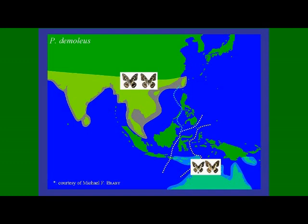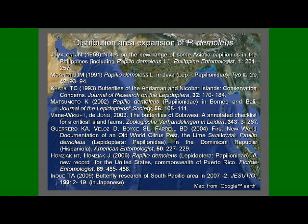First, Papilio demoleus occurs from the Middle East to Marei and Australia, but until recently was not found in Borneo, Sulawesi, or the Philippines. However, since 1960, Papilio demoleus has immigrated into these areas and also into the Caribbean nations. In addition, Inove found these species on Guadalcanal Island in the Solomon Island group during his research in 2007. Prior to this, Papilio demoleus had not been reported there. The major host plants of Papilio demoleus are citrus plants.